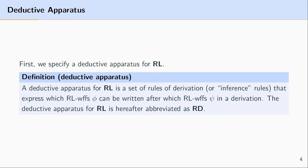These are rules that express which well-formed formulas can be written after which well-formed formulas in a derivation. One way of thinking about the deductive apparatus is it's the set of rules of reason, or the permission rules, that allow us to move forward in a proof.